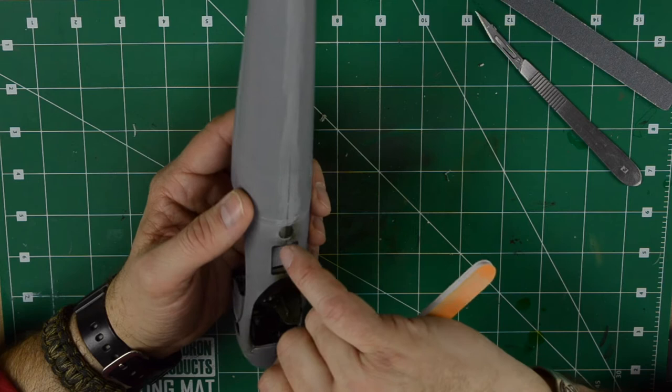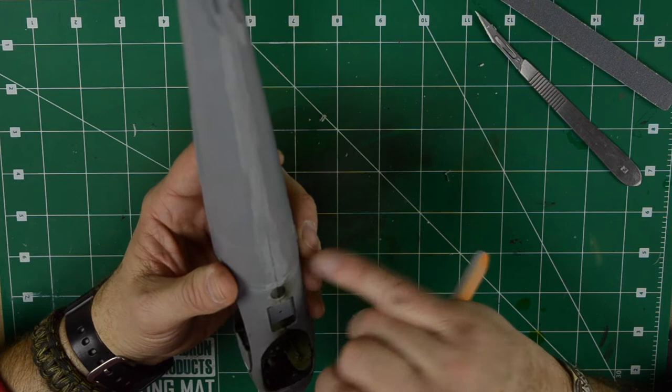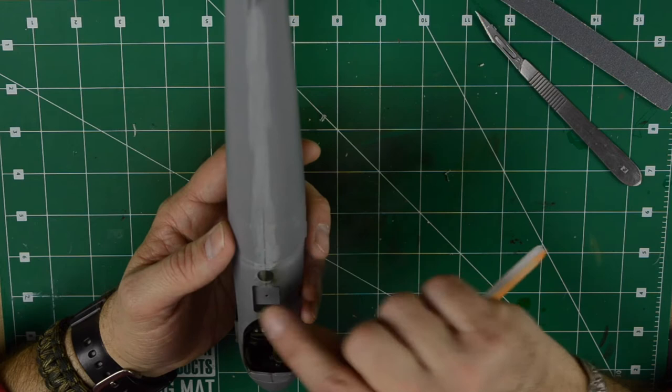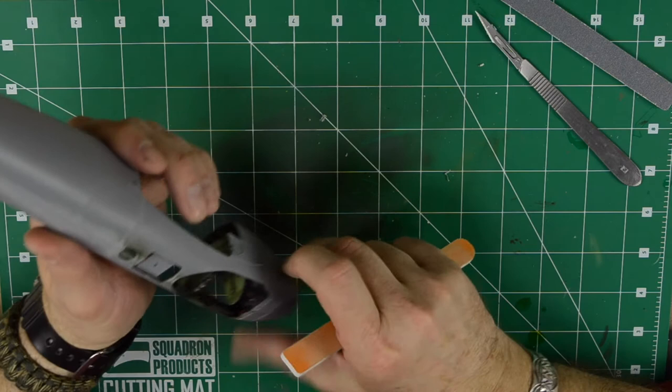Make sure you stay away from, as much as you can, from the little access hatches here. They're very subtle, there's not much, it doesn't take much to get them removed or to accidentally blemish them. Try to be as gentle as you can.